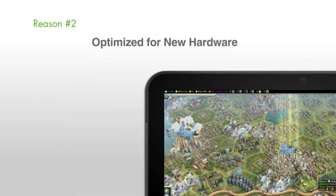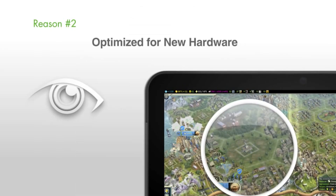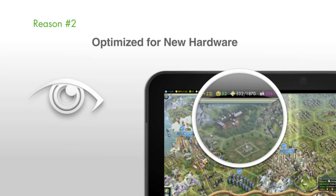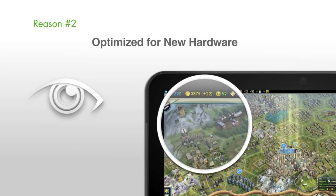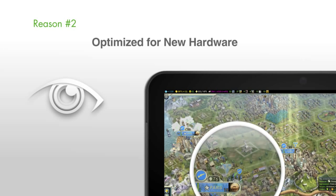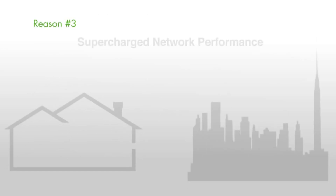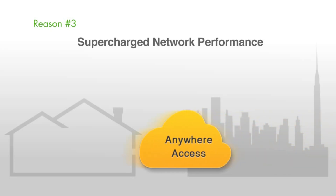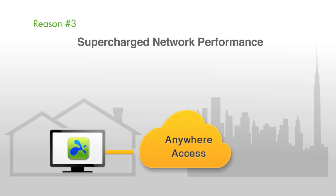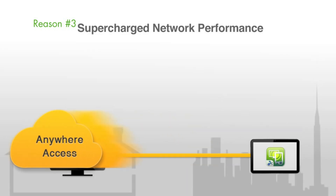Reason number two: optimized for new hardware. Splashtop 2 supports the latest technologies from hardware partners to stream video at up to 30 frames per second — great graphics and smooth video. Reason number three: supercharged network performance. When you purchase Splashtop 2's in-app Anywhere Access Pack, you'll be able to securely connect to your computer from anywhere in the world, with self-optimizing technology that adapts to your network conditions. Take full advantage of your 3G network or internet connection bandwidth.